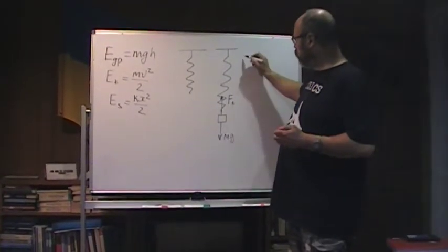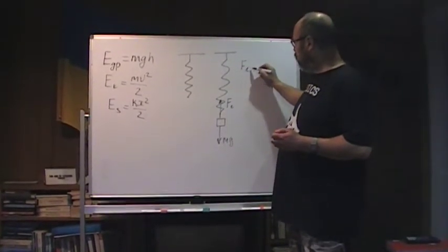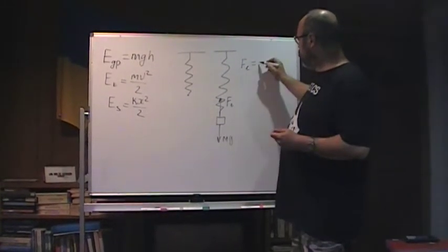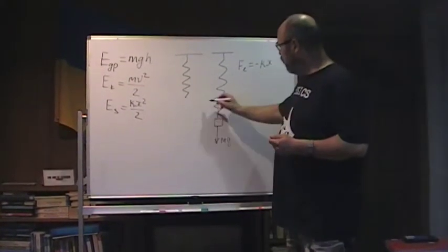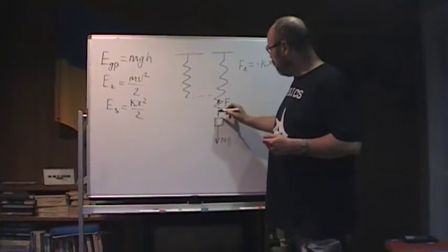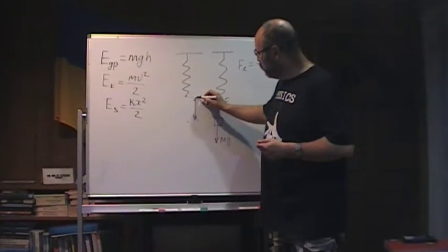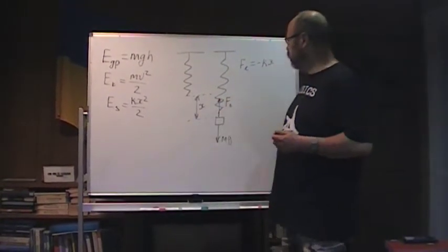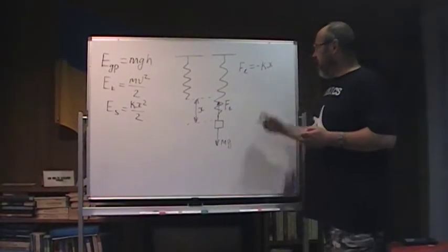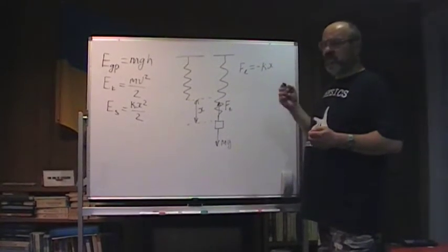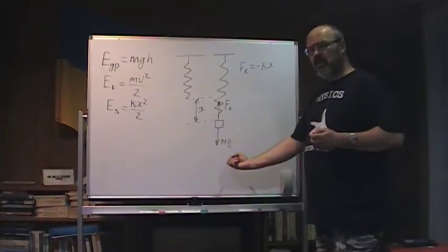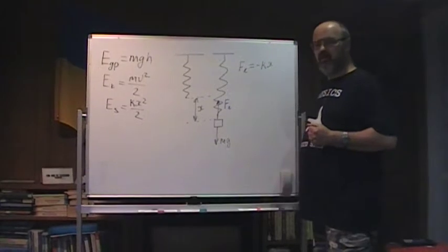According to Hooke's law, this force equals negative Kx, where x is the change in the length of the spring. This is an extension. Minus means just a direction. When we stretch, force will be in the opposite direction. We compress, force again in the opposite direction.